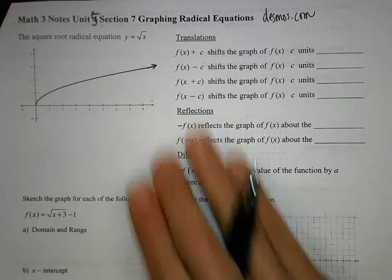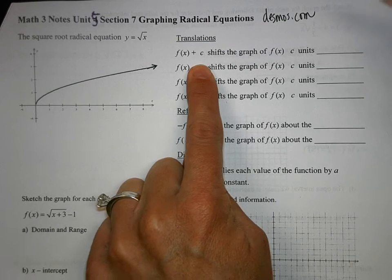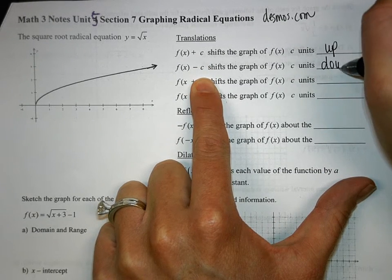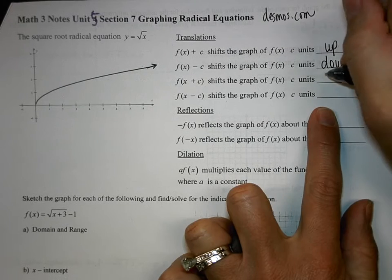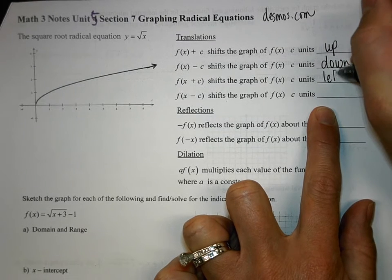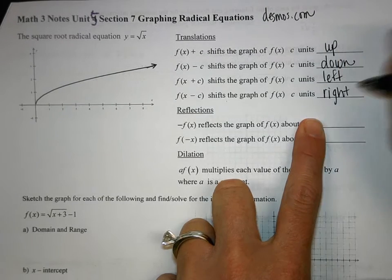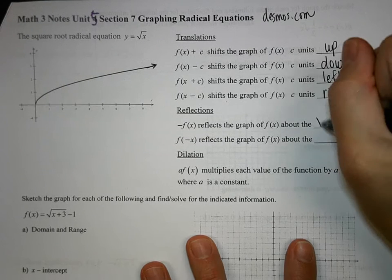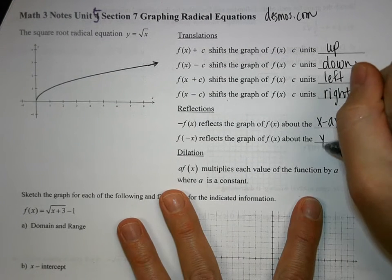This works just like all of our other graphs we've been dealing with this entire year. Anytime you have a plus C at the end, it shifts up. A minus C shifts down. When you have plus C with the X in parentheses, it shifts left. And minus C shifts to the right. If you have a negative inside the parenthesis like that, it's going to reflect over the Y axis.